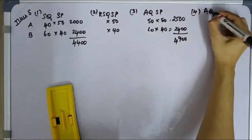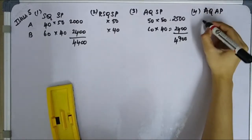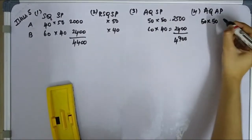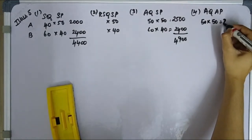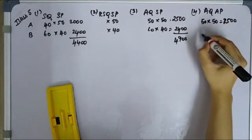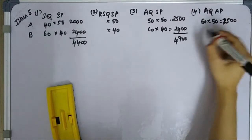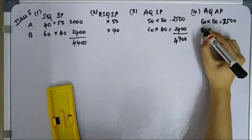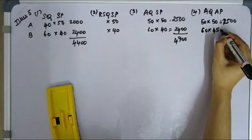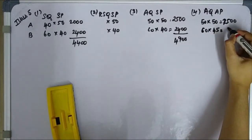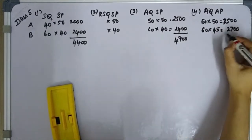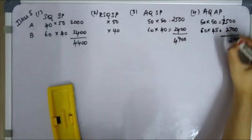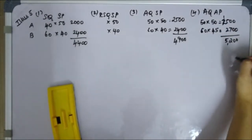Fourth column: AQ×AP. For A: 50 into 50 gives 2,500. For B: 60 into 45 gives 2,700. Adding these together gives a total AQ×AP of 5,200.